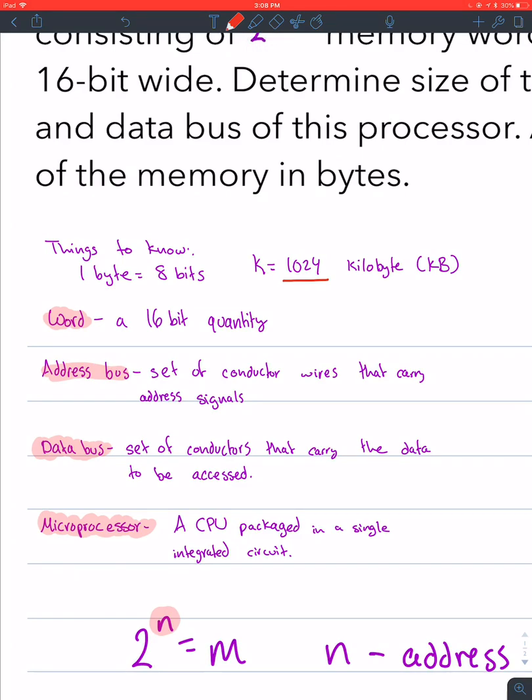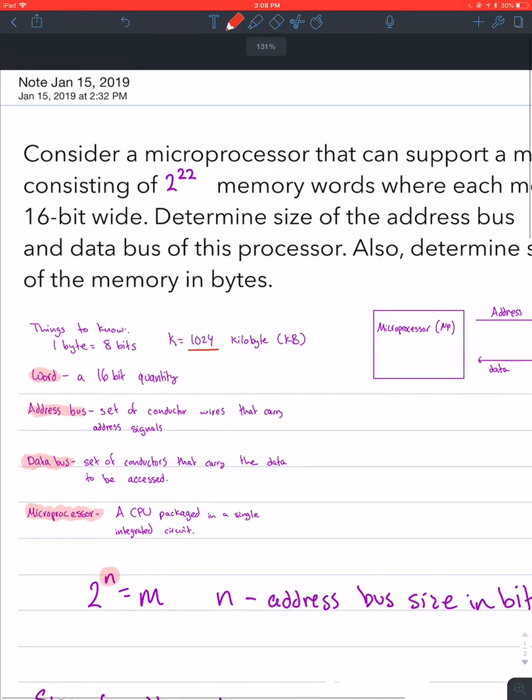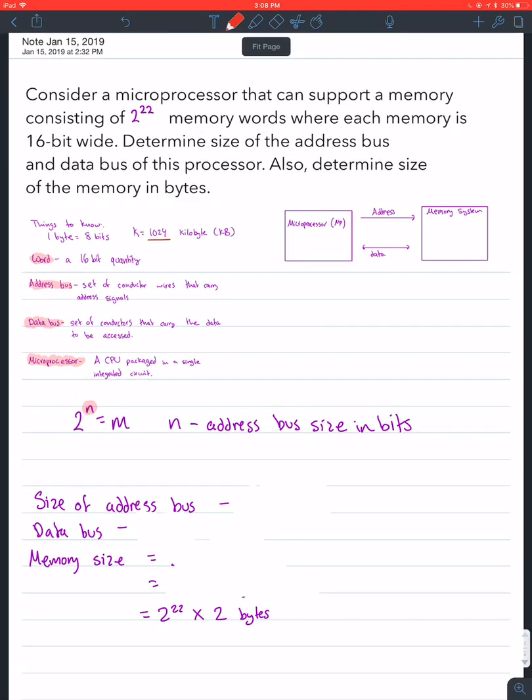The definition of word - he gives you 16-bit wide, but if they didn't specify and just said word, we'd know it's a 16-bit quantity. An address bus is a set of conductor wires that carry address signals, and a data bus is the set of conductors that carry the data to be accessed.